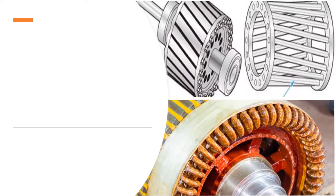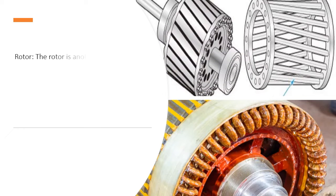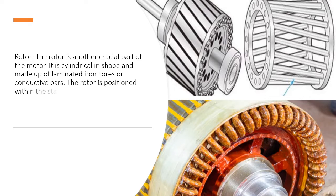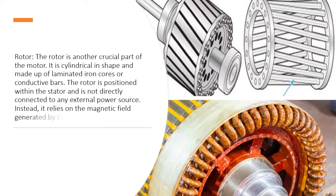Rotor: the rotor is another crucial part of the motor. It is cylindrical in shape and made up of laminated iron cores or conductive bars. The rotor is positioned within the stator and is not directly connected to any external power source. Instead, it relies on the magnetic field generated by the stator.